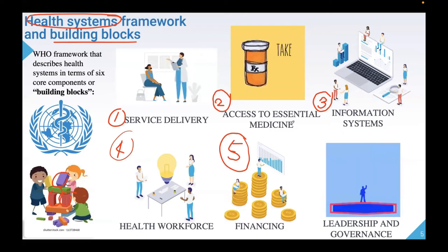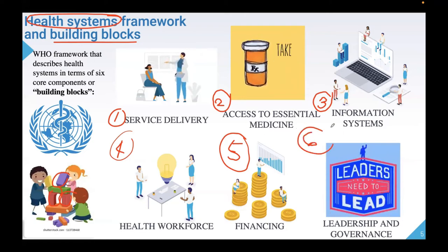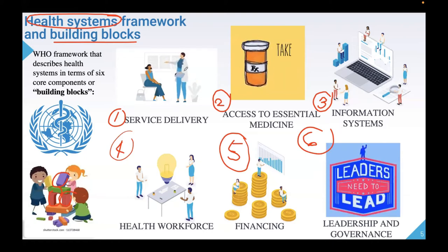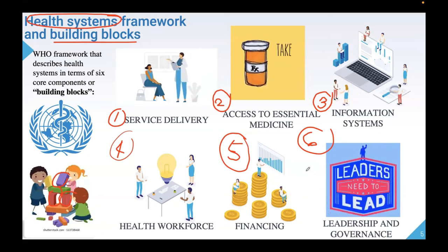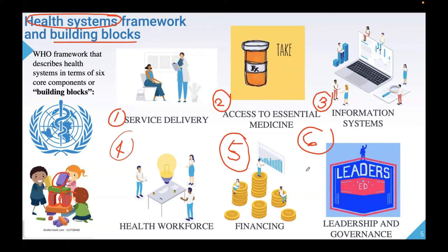The most important among all these building blocks is what we call leadership and governance. Effective leadership and governance ensures the existence of strategic policy frameworks, effective oversight, coalition building, provision of appropriate incentives, and attention to system design and accountability. Our leaders are the primary policymakers — they are the pillars of our system. Kindly memorize these building blocks.